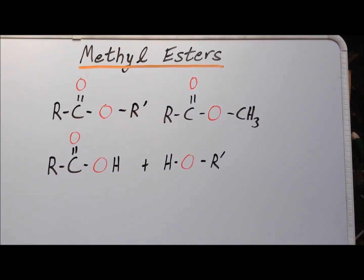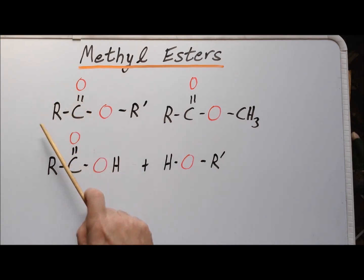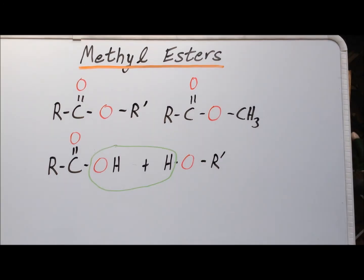A simple way to synthesize a wide class of esters is to simply react a carboxylic acid with the group R with an alcohol that bears the R prime group. The result of the reaction is the structure shown in the upper left. During the linkage of the carboxylic acid and the alcohol, we have the loss of the elements of water. So this is also a dehydration reaction, and in addition to the ester product, the other product is water.